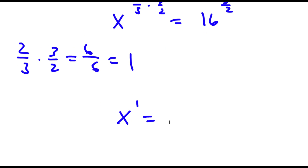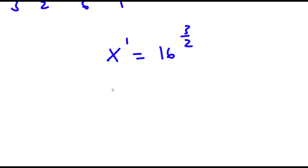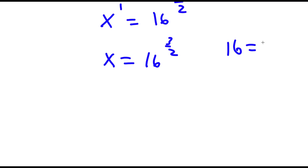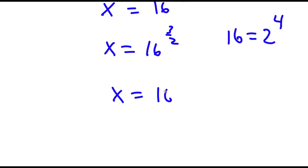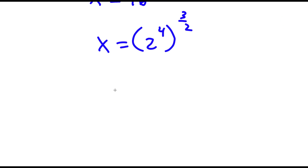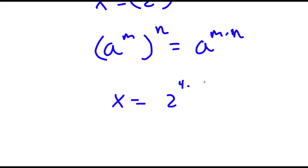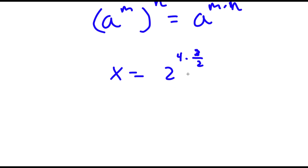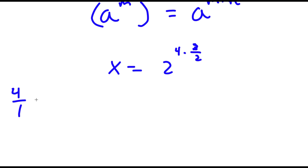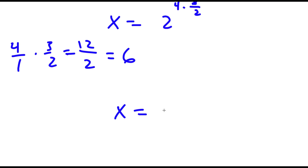So now I have x to the power of 1 is equal to 16 to the power of 3 over 2. And x to the power of 1 is the same thing as x, so x is equal to 16 to the power of 3 over 2. Now to simplify this, 16 is the same thing as 2 to the power of 4. So now I have x is equal to 2 to the power of 4 to the power of 3 over 2, which equals 2 to the power of 4 times 3 over 2. And 4 times 3 over 2 is 4 over 1 times 3 over 2, which is 12 over 2, equal to 6. So now I have x is equal to 2 to the power of 6.